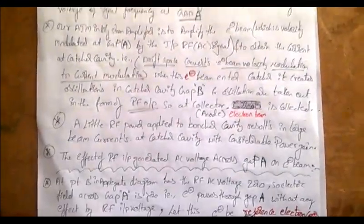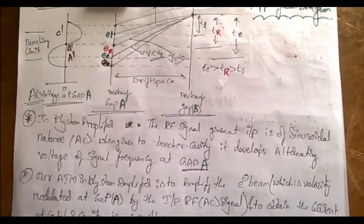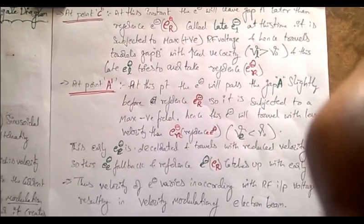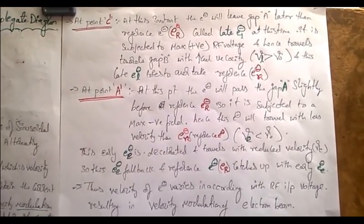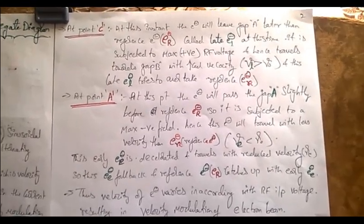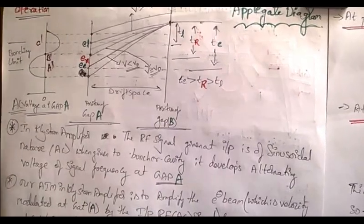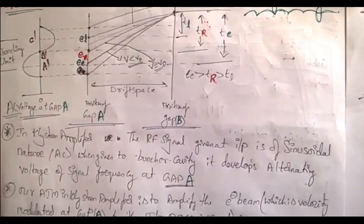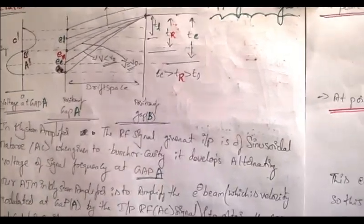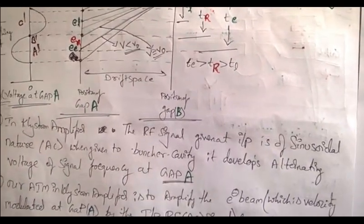Now let us see what the early electron and late electron are, and what effect the RF input has on them. At point C, due to the RF input voltage, an electron leaves gap A later than the reference electron — this is the late electron. The reference electron went first, and the late electron follows after it, while the early electron went before the reference electron.